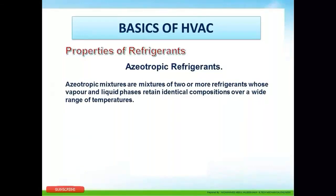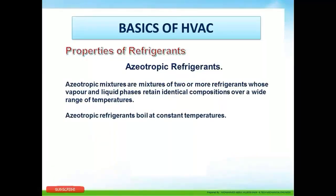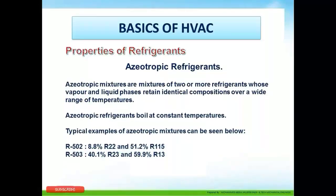An azeotropic refrigerant is a mixture of two or more refrigerants whose vapor and liquid phases retain identical composition over a wide range of temperatures. A liquid refrigerant can be in its pure state or a mixture of two or more refrigerants. To be azeotropic, it needs to retain that identical liquid-phase composition over a wide range of temperatures. Azeotropic refrigerants boil at a constant temperature. Typical examples are R502 and R503.